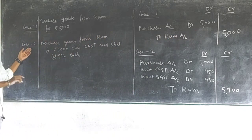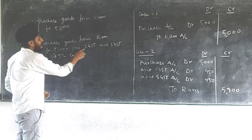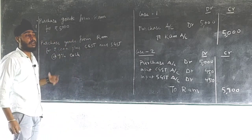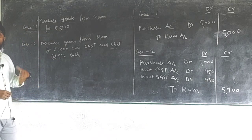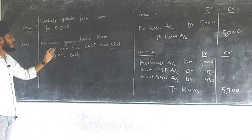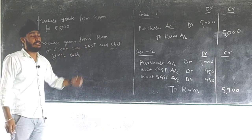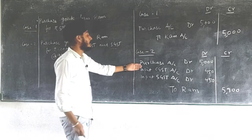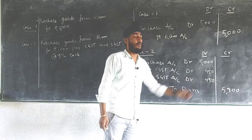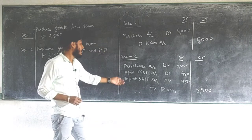Case two: if GST is levied. Purchase goods from Ram for rupees 5000 plus CGST and SGST at the rate of 9% each. CGST and SGST are applied when goods are purchased within the state. Whenever CGST and SGST are levied on purchase of goods, we write the journal entry as: Purchase Account debit, Input CGST Account debit, Input SGST Account debit, to Ram Account. The GST levied on purchase is called Input GST.